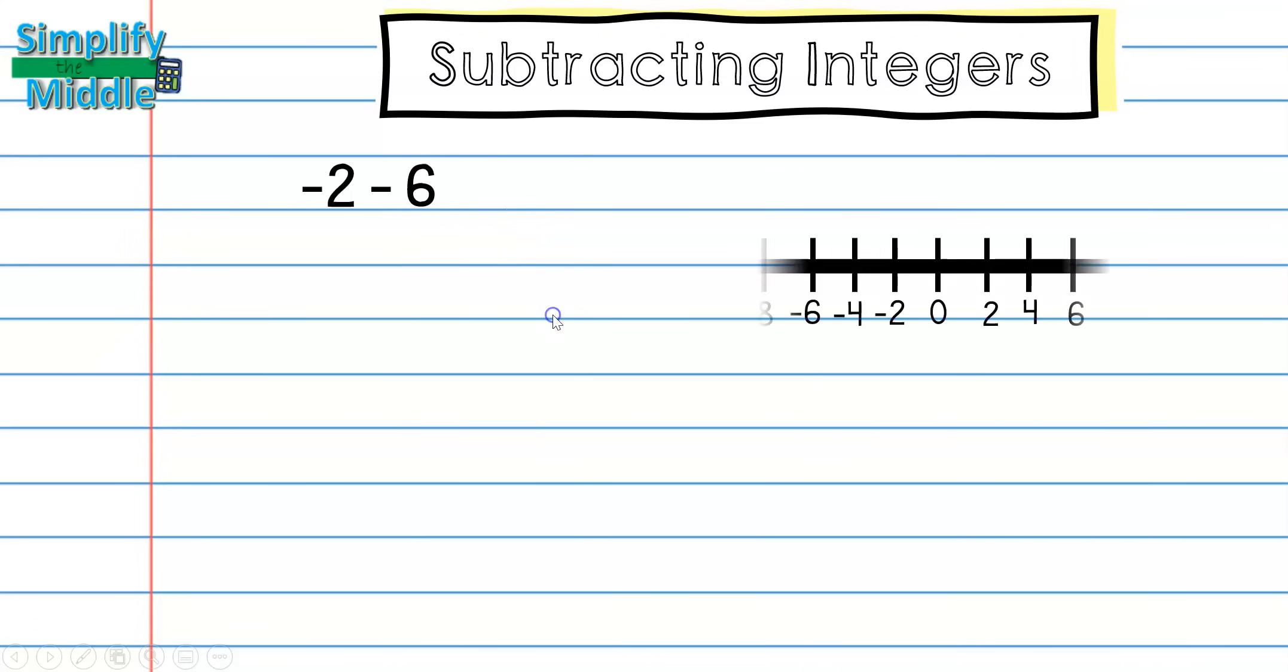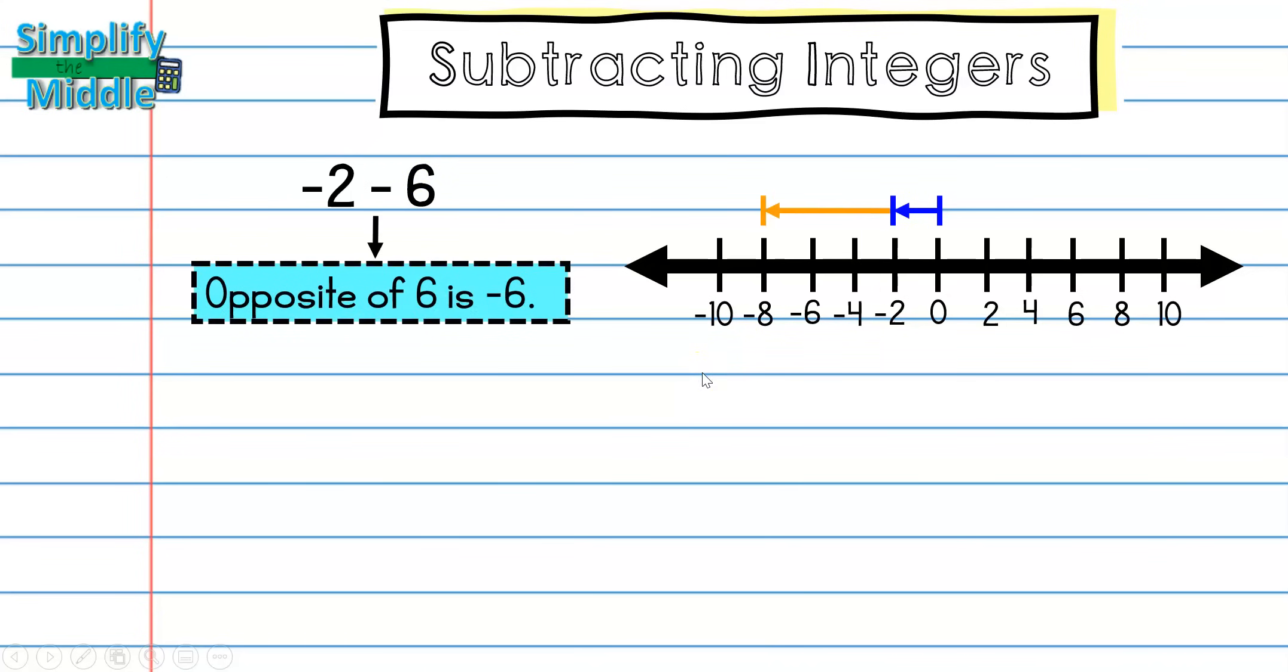We are going to turn this into an addition problem by adding the opposite. Let's look at this problem on our number line because we did a lot with number lines to prepare for this lesson. We know that on this particular problem we're going to start at zero and go to negative 2, and then we're going to go the opposite of positive 6, so we're going to be going negative 6. That number line problem right there told us to go the opposite of 6, which is negative 6. So that was our first step.